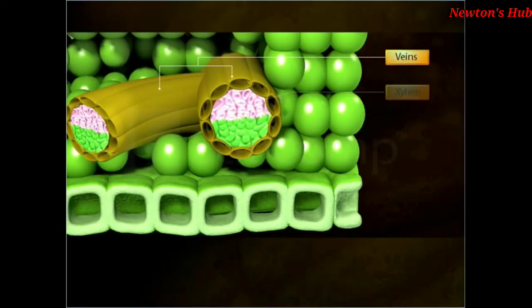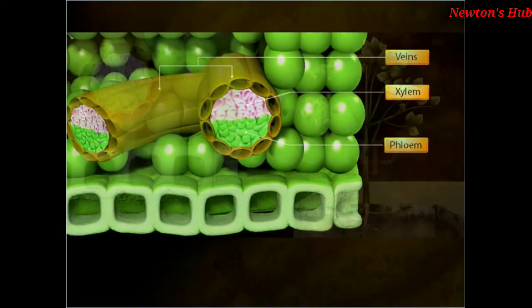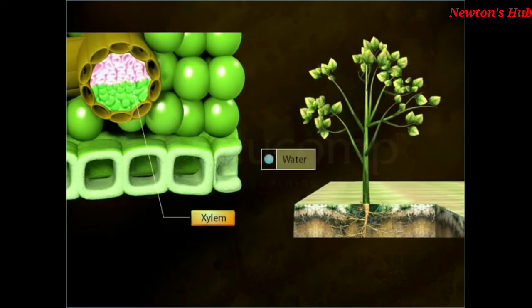Veins comprise of both xylem and phloem. Xylem carries water and mineral salts from the roots to the leaves and they diffuse out to the surrounding mesophyll cells. The sugar produced during photosynthesis is carried by the phloem cells out of the leaves to the other parts of the plant.